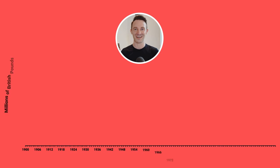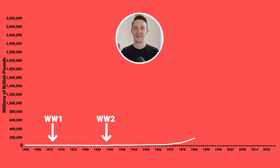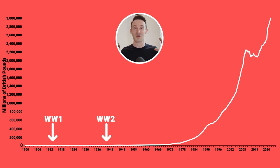But what about a longer period that takes us up to today? The amount of money created in the economy since the 1970s is just astonishing — it happened at such a pace that you have to zoom out so far you can't even see those increases for the World Wars anymore. An absolutely astonishing amount of money has been created over the last 50 years, resulting in the loss of value of currency.